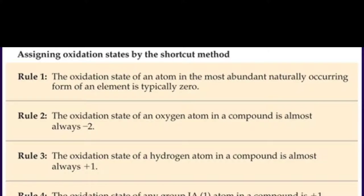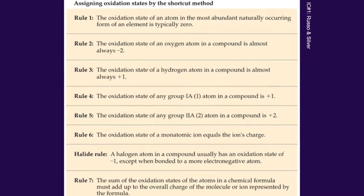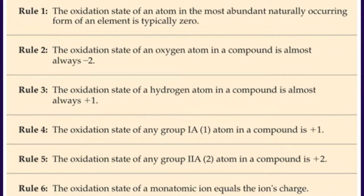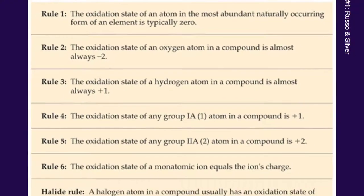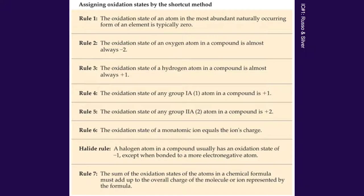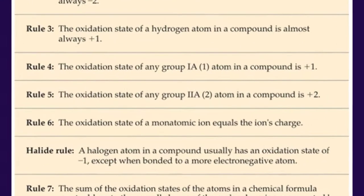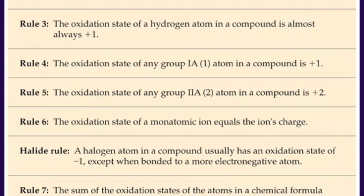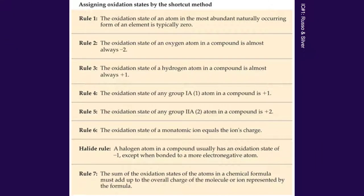Oxygen is in group 6 and generally forms negative 2 in all compounds, with some exceptions. Hydrogen also generally forms a positive 1 charge — we saw that with our acids. Again, there are some exceptions, but in covalent compounds in particular, when hydrogen is bonded to a nonmetal, it's going to have a positive 1 charge. The next two rules are familiar: group 1 atoms form a plus 1 charge, group 2 atoms form a plus 2 charge. Rule 6 states that for a monatomic ion, the oxidation state is the charge on the ion. So rules 1 through 6 are ones we've been following all year.